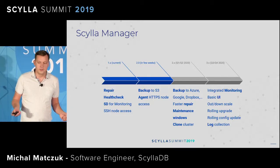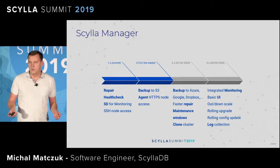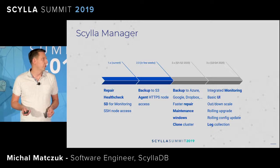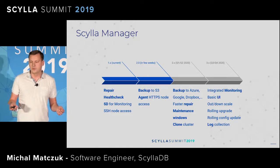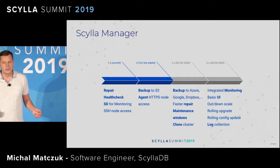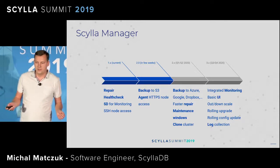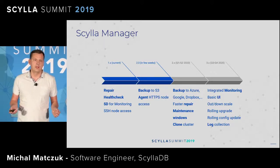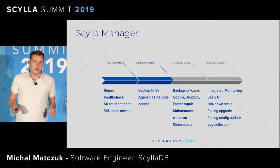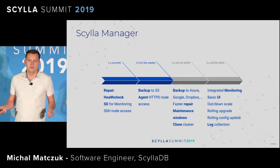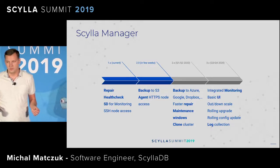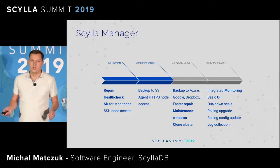Of course it supports service discovery for Scylla monitoring. Within a few weeks we'll have the long-anticipated 2.0 version, which introduces backup to S3 buckets as I'll show you. It also introduces some architectural changes — before we used SSH, but now we're switching to HTTPS agents. The technology we're bringing allows you to back up to virtually any cloud provider you want, even FTP and other options.